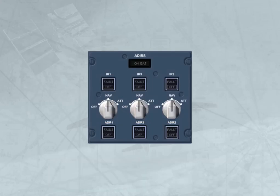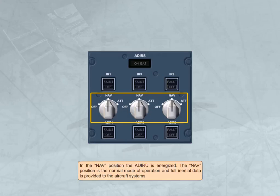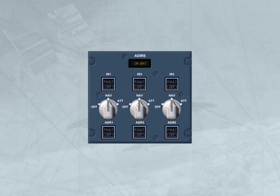In the nav position, the ADR is energized. The nav position is the normal mode of operation, and full inertial data is provided to the aircraft systems. The on-bat light comes on to inform the crew that the ADR system is being powered by aircraft batteries only. The light also comes on for a few seconds at the beginning of a full alignment, as a test of the battery circuit.